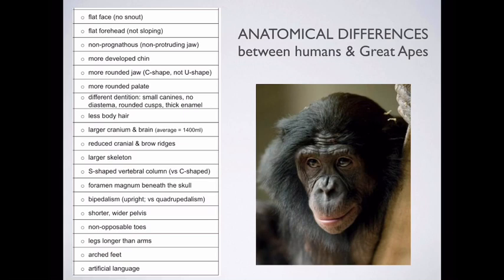So we have non-opposable toes. When you look at the ratio of our arms and legs — because we don't walk on all fours, the ratio has shifted. If you look at the great apes, their arms and legs are more or less the same length to facilitate quadrupedal or knuckle walking. For us, because we no longer walk on all fours and only walk on two legs, our ratio has changed and our legs are much longer than our arms.